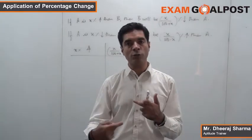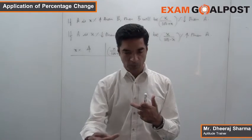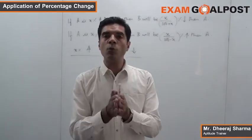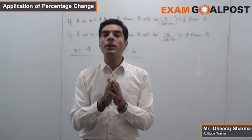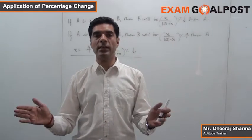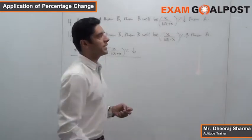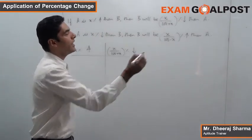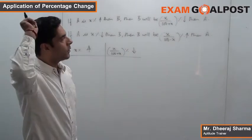The question can be on profit loss, discount, ratio proportion, time speed, or time and work. So what we have discussed already is that if A is X percent more than B, then B is not X percent less than A, it is X/(100+X) percent less than A. And if A is X percent less than B, then B will be X/(100+X) percent more than A.